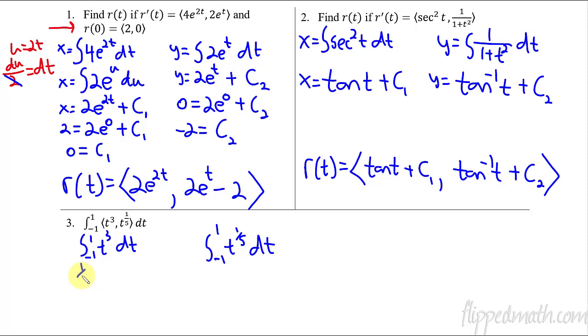So this is 1 fourth t to the fourth. And we're evaluating it from negative 1 to 1. And so now plug in the 1. You get 1 fourth minus plug in the negative 1. You still get 1 fourth. So then that equals 0.